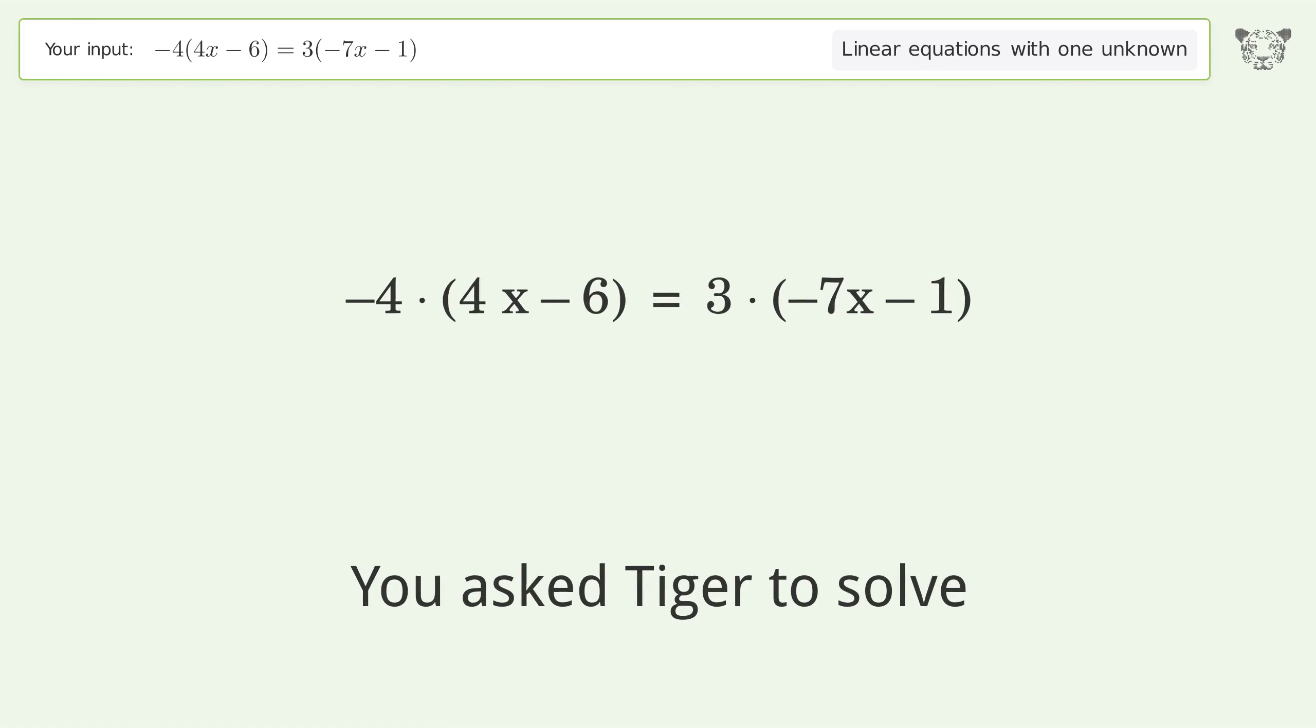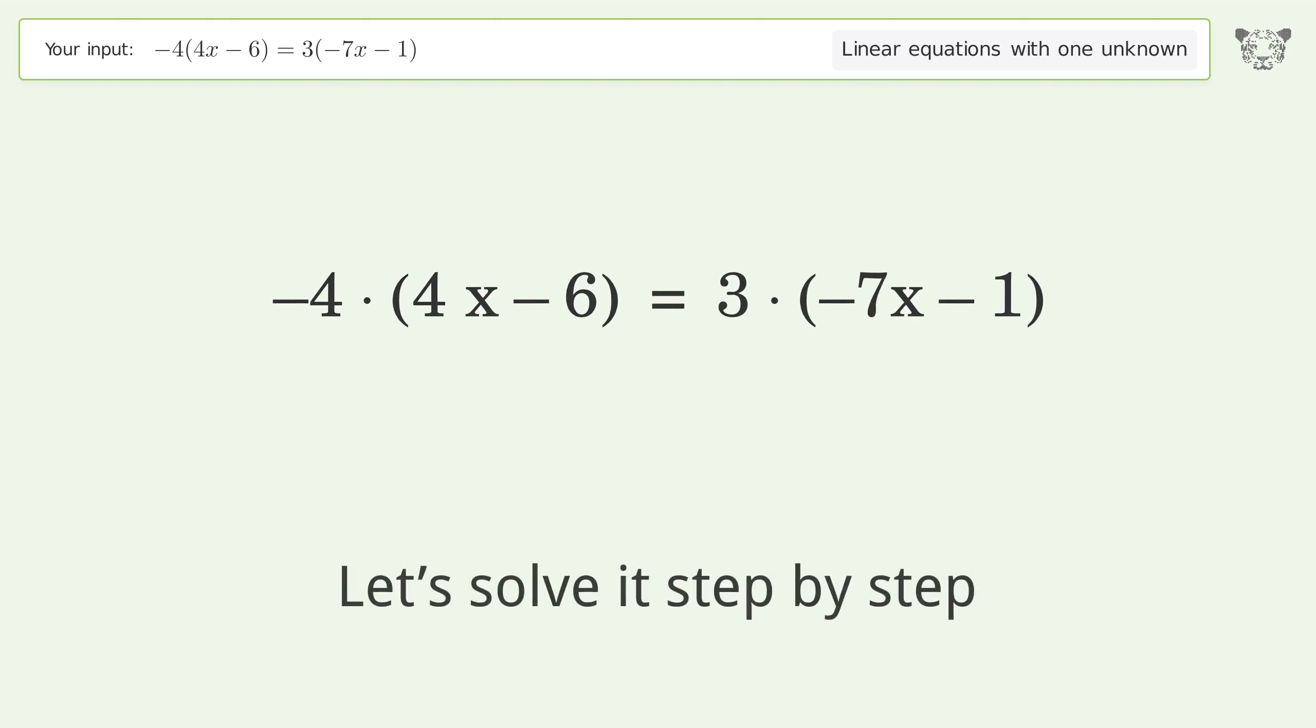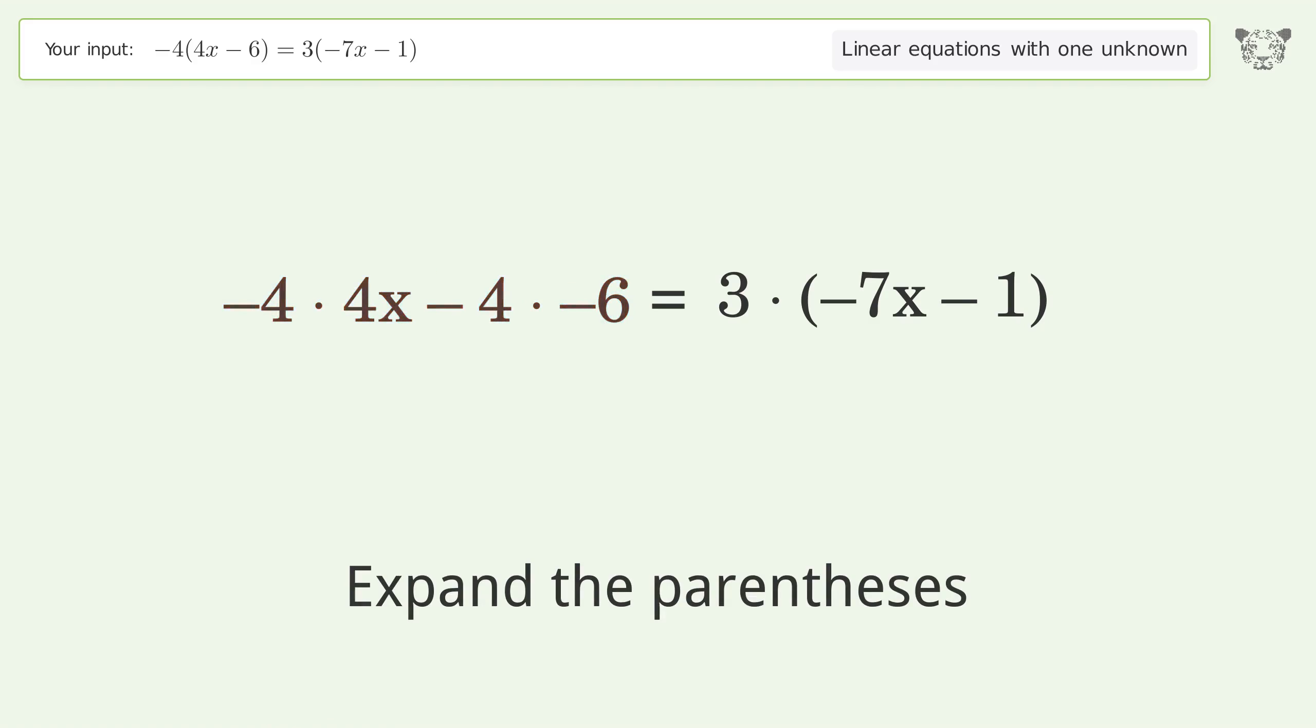You ask Tiger to solve this. It deals with linear equations with one unknown. The final result is x equals negative 27 over 5. Let's solve it step by step. Simplify the expression, expand the parentheses, multiply the coefficients, simplify the arithmetic.